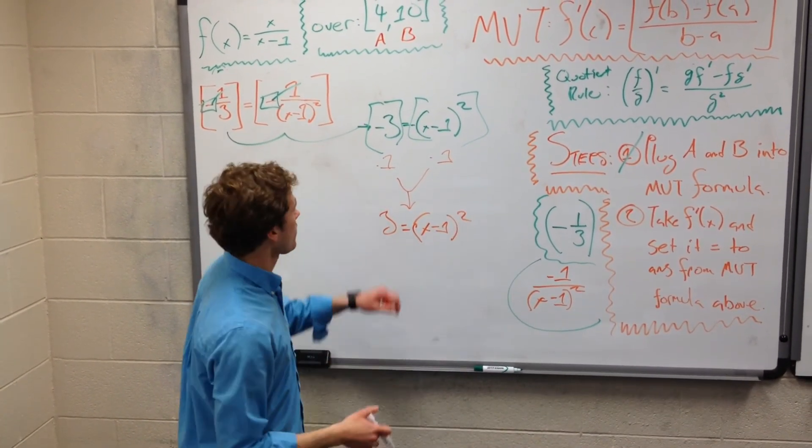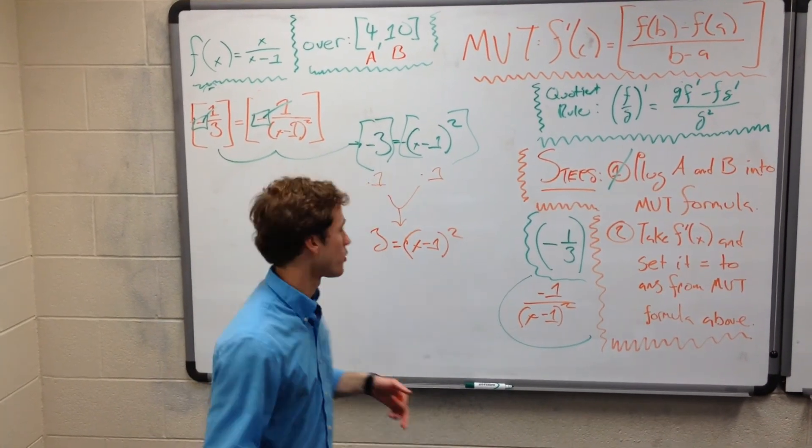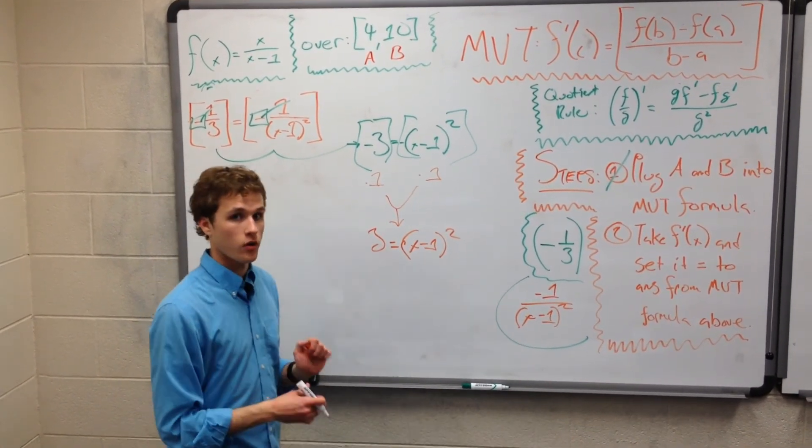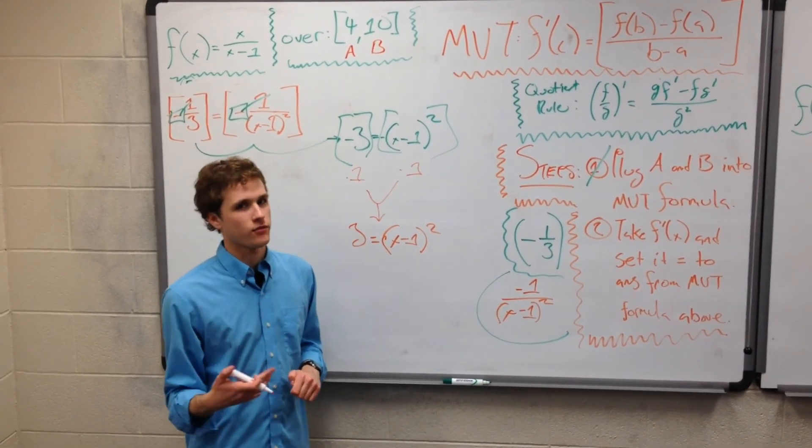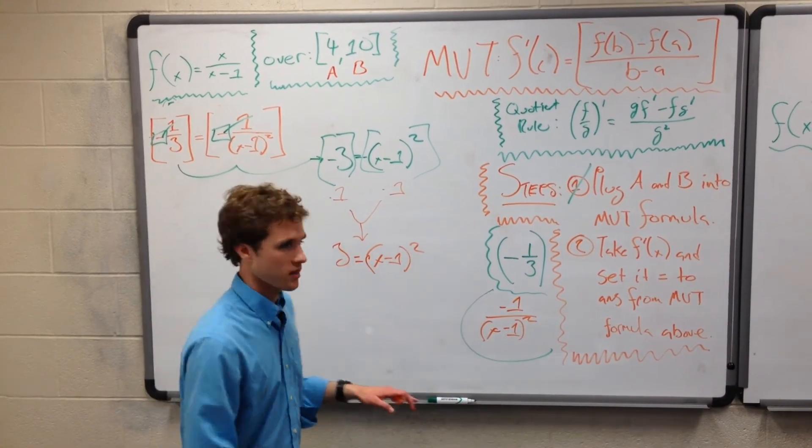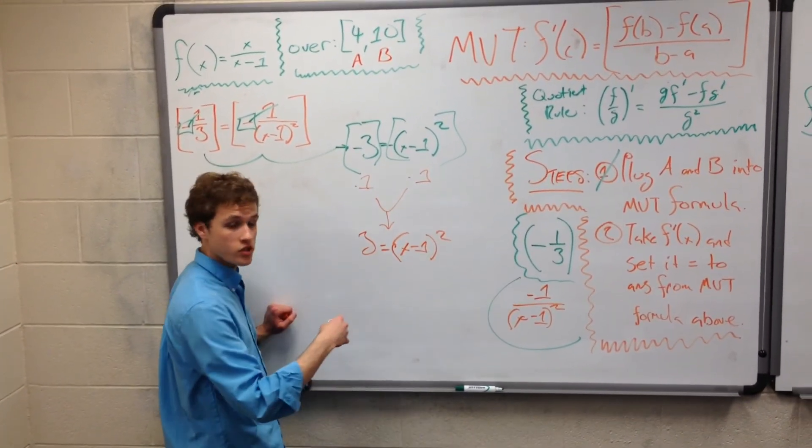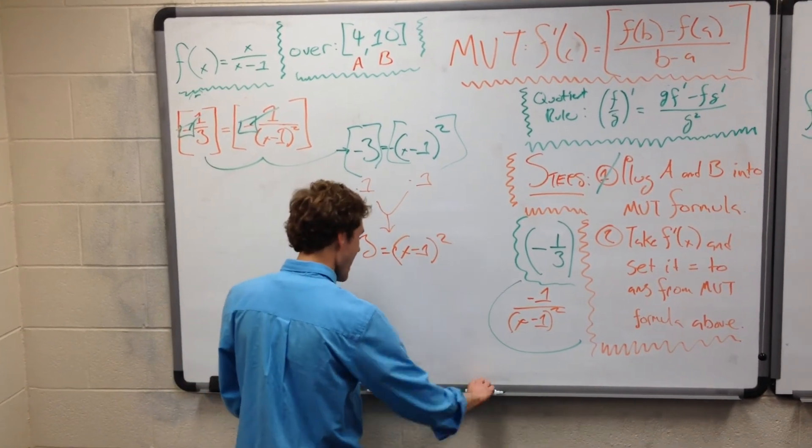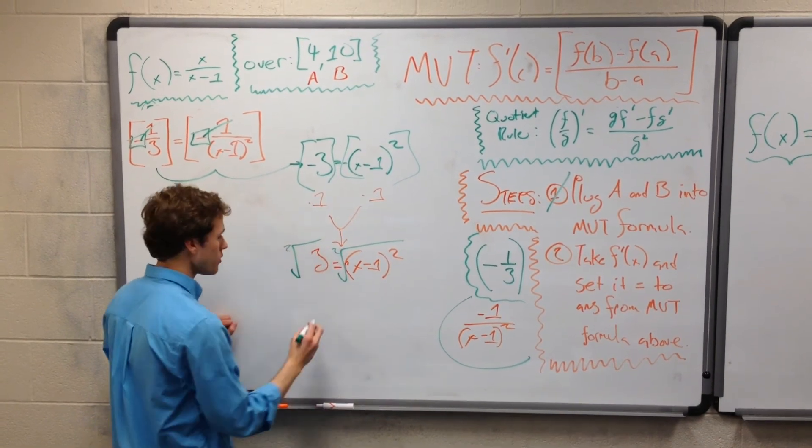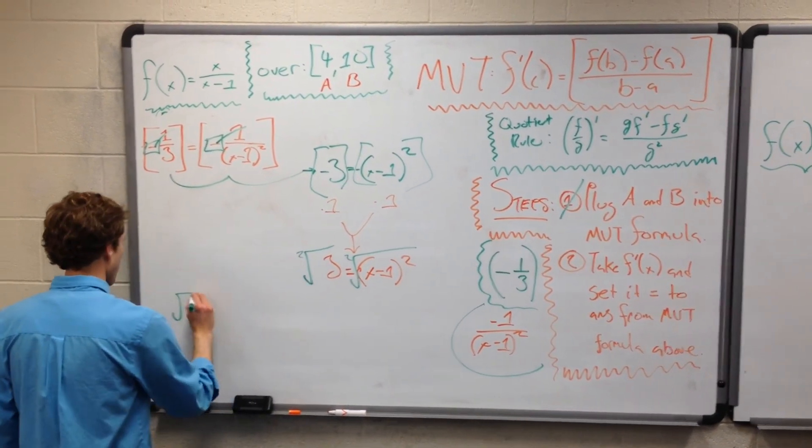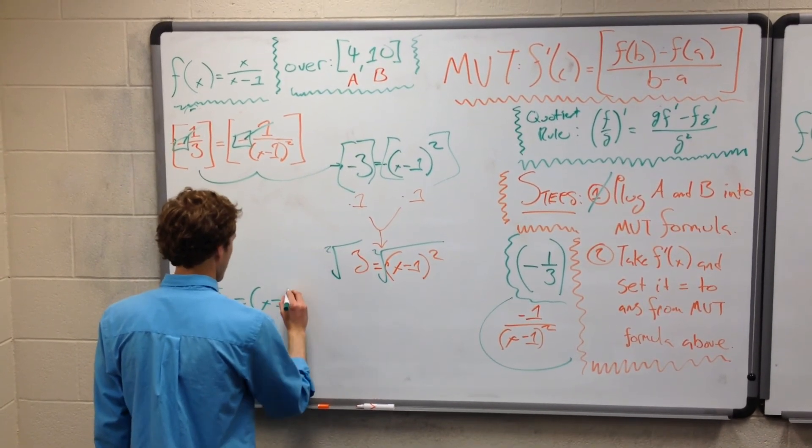Now, why do we do that? Well, when we take the square root, which is the next step, we can't be taking the square root of a negative number because the square root of 3 is just radical 3, but the square root of negative 3 is radical 3i, which we don't want complex numbers right now. So we have 3 equals X minus 1 squared. Let's go ahead and put a radical on each side and take the square root. So now we have that radical 3 equals X minus 1.